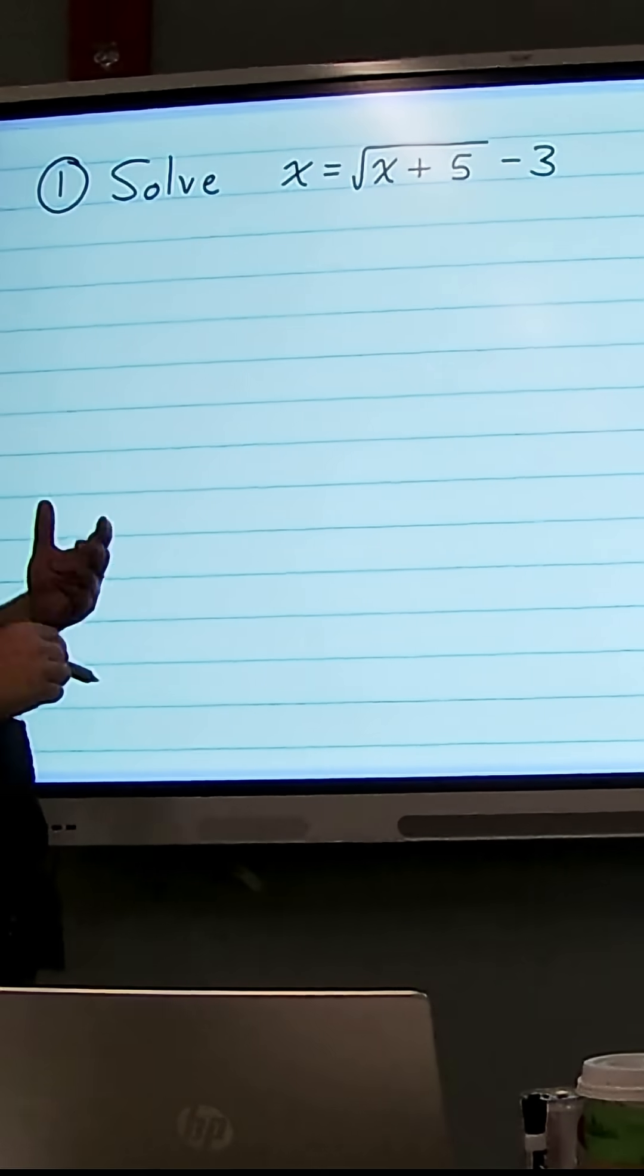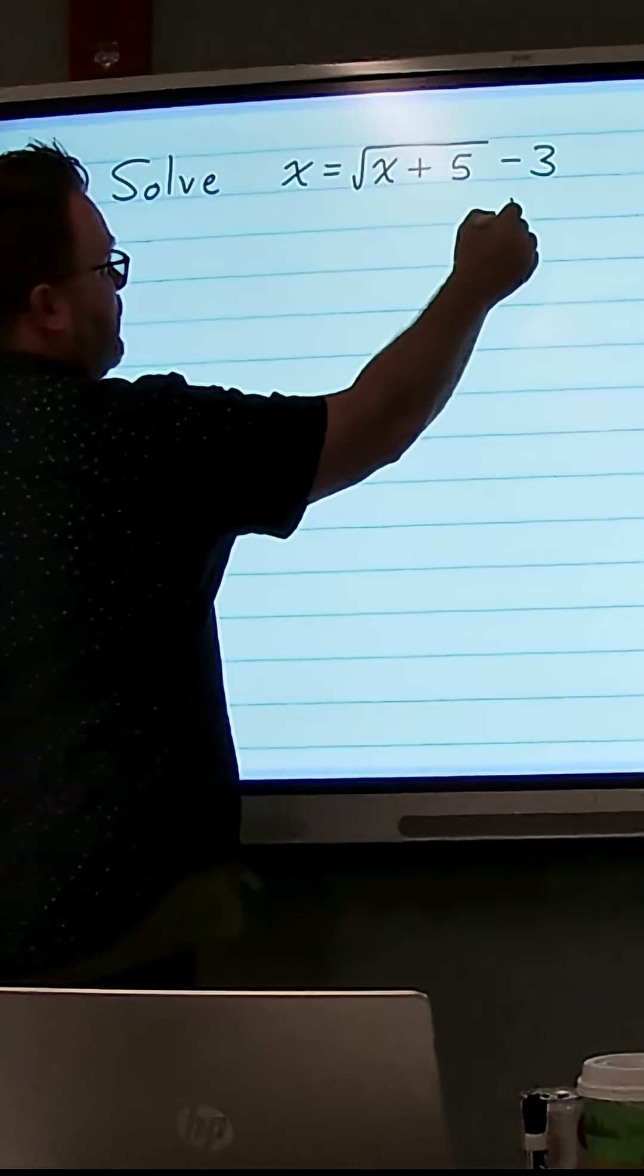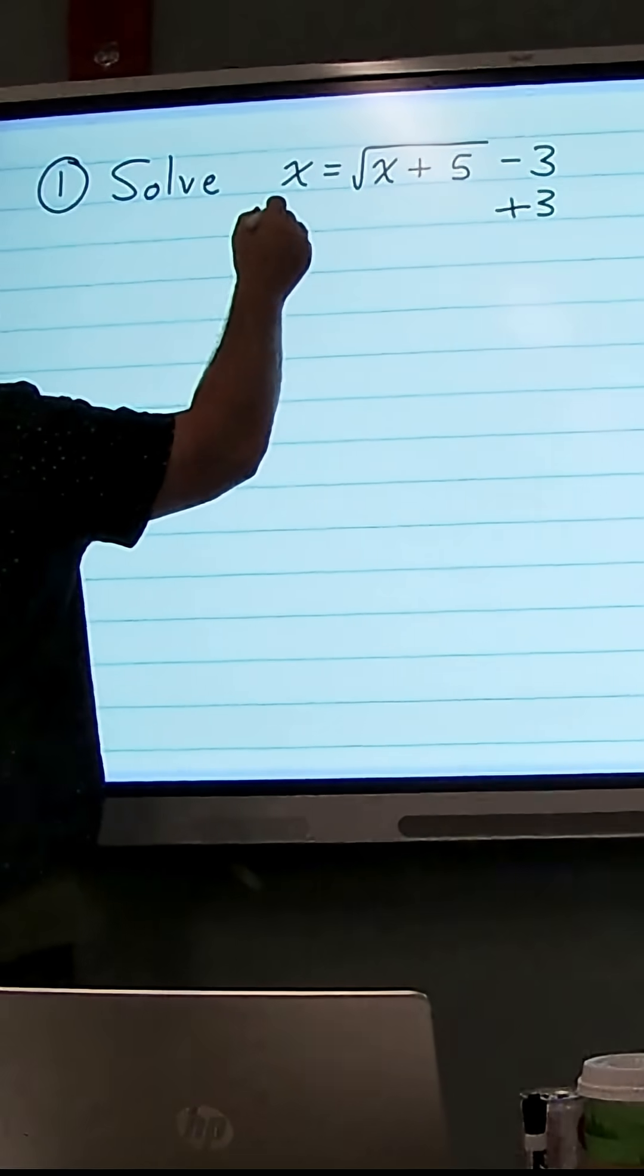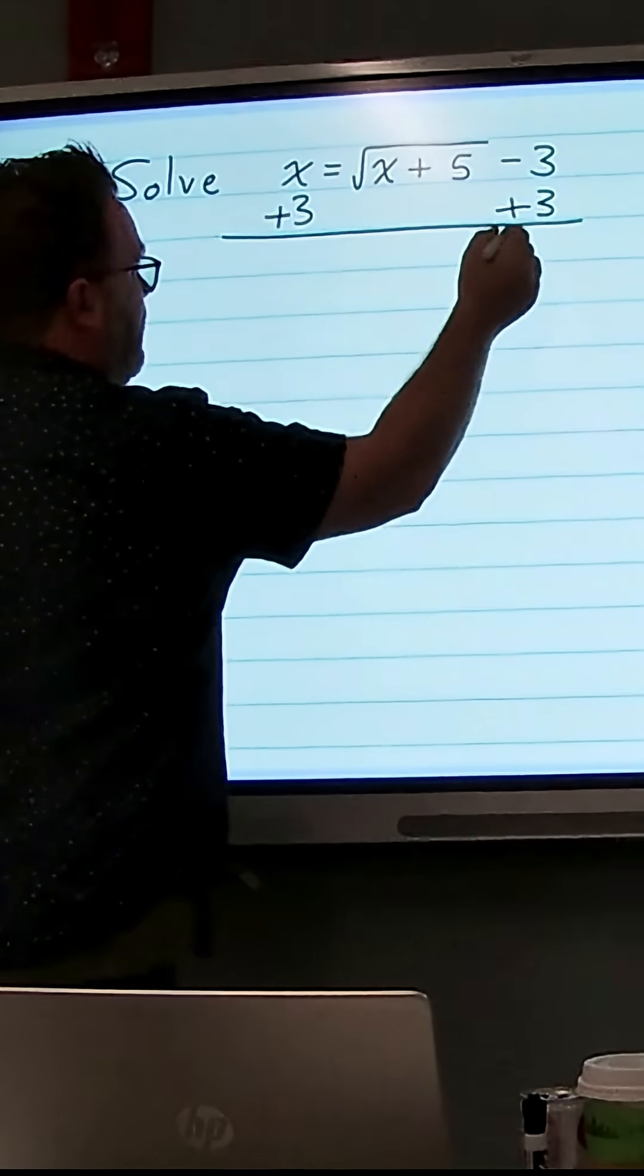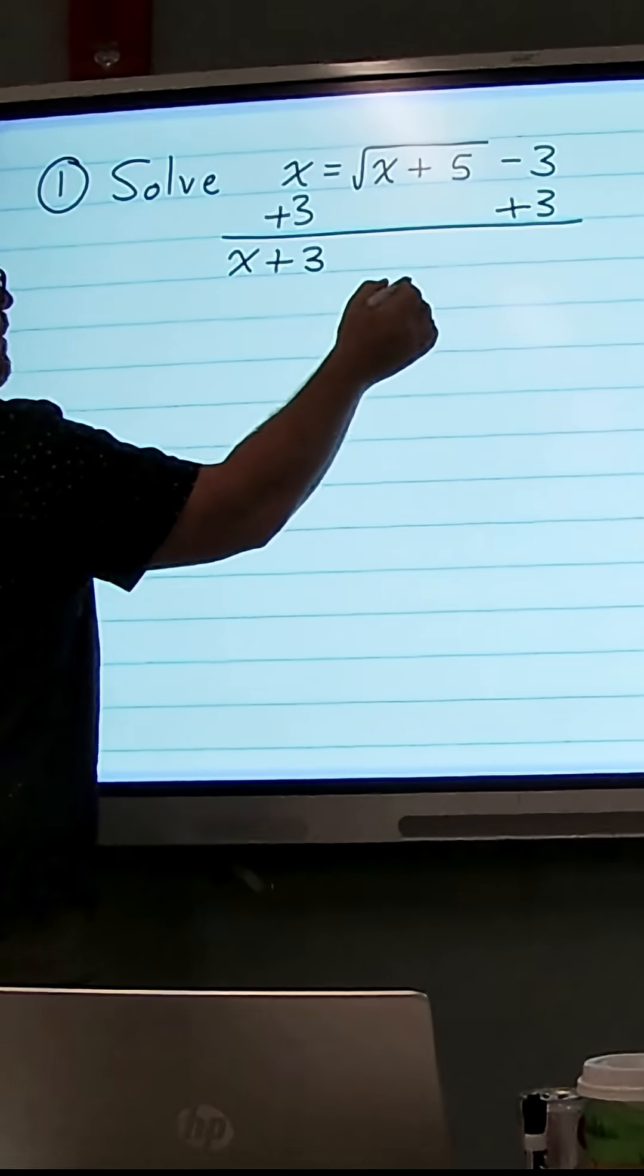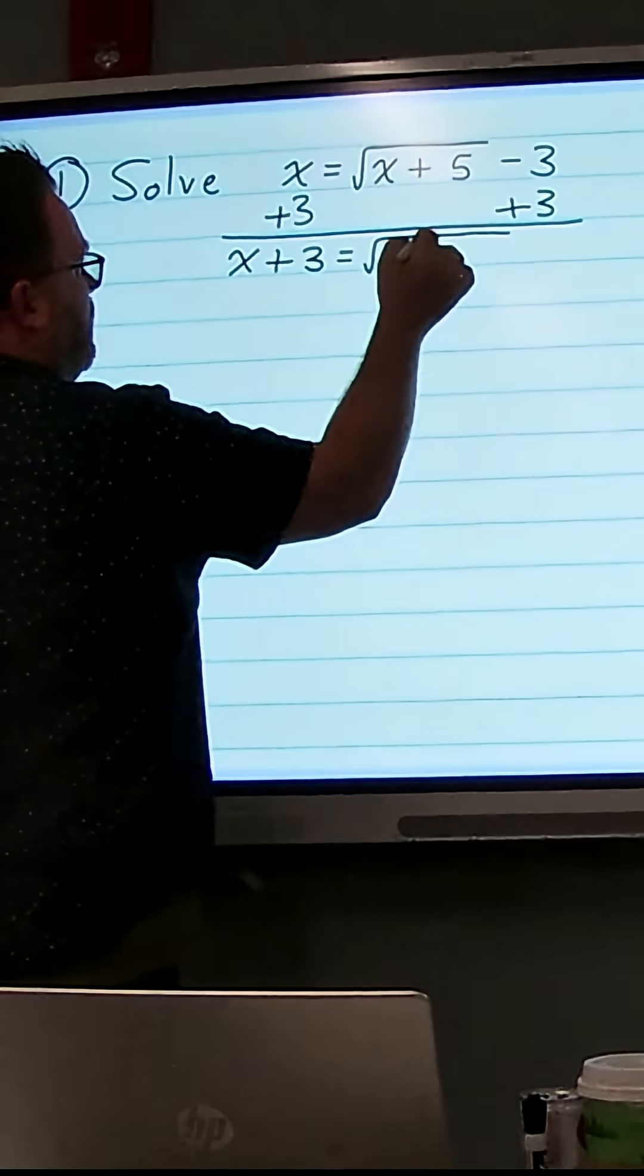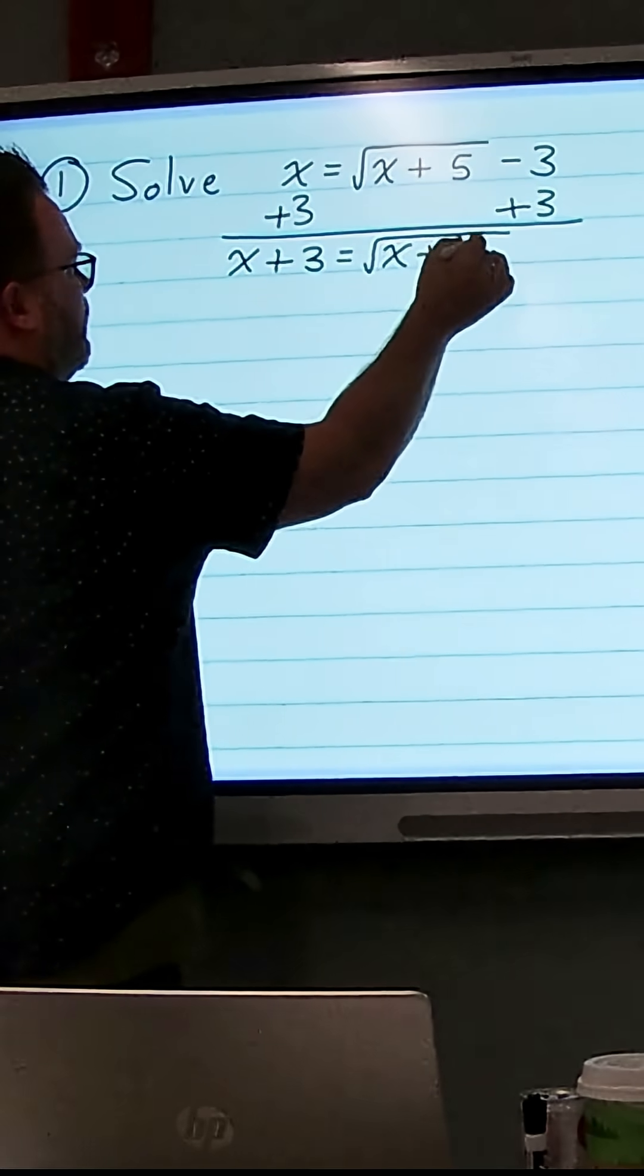Our first step is to isolate the square root on one side of the equation, so I'm going to add 3 to both sides. On the left-hand side we're going to get x plus 3, and then on the right-hand side 3 minus 3 is 0, so we're just left with the square root of x plus 5.